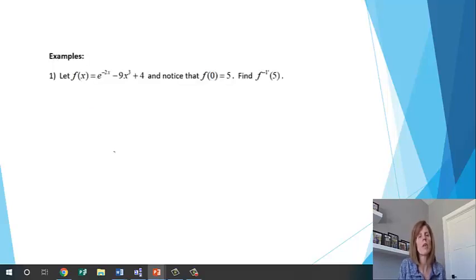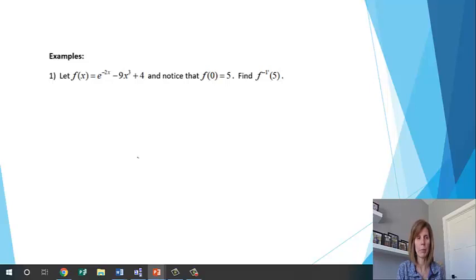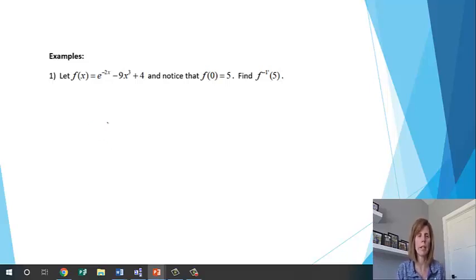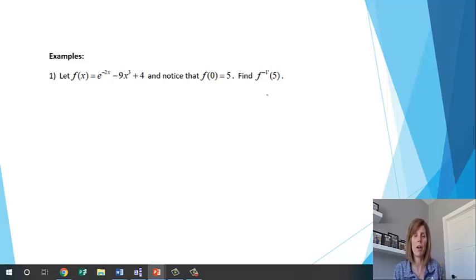We're going to jump right into examples. I'll do a problem, then ask you to pause the video and try it yourself, then come back and check your work. First example: let f(x) equal e to the negative 2x minus 9x cubed plus 4, and notice that f(0) equals 5. Find the derivative of the inverse at 5.